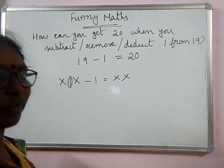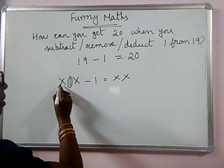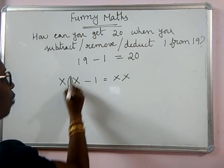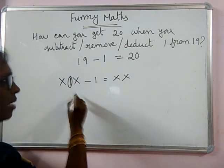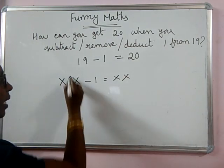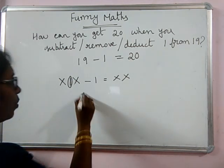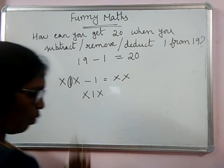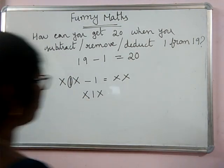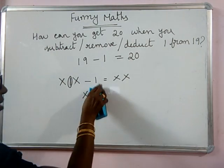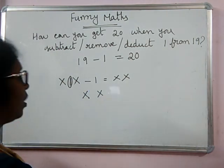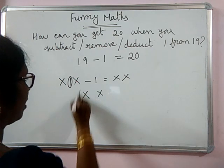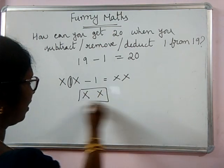20! X is for 10, and IX is 9 — making 19. You remove this 1, and from 19 you are getting 20.